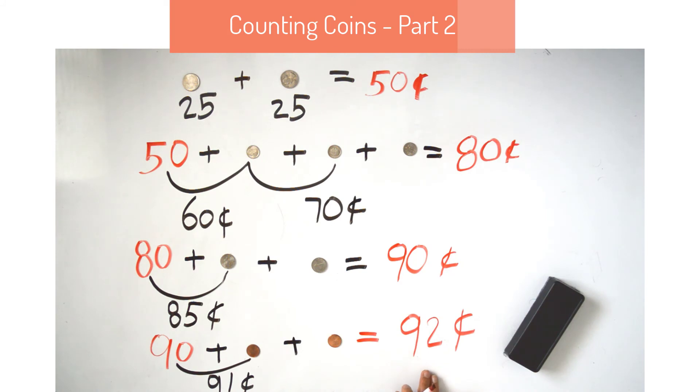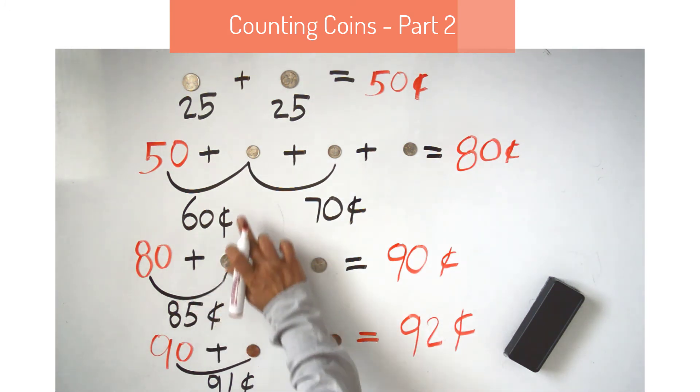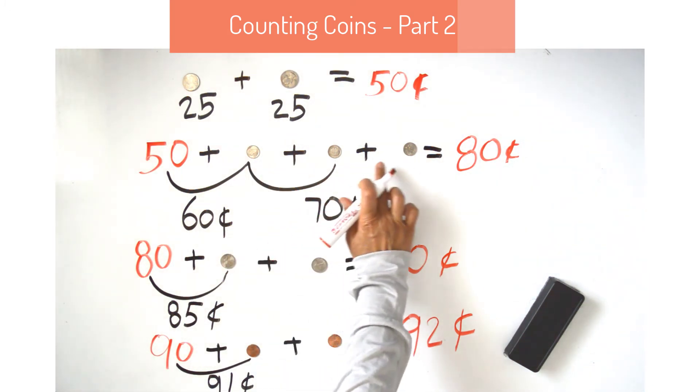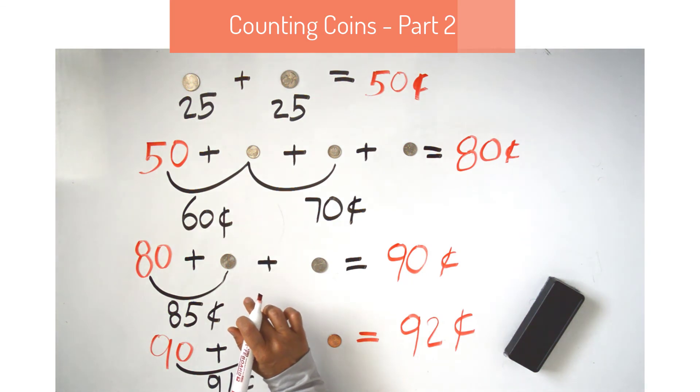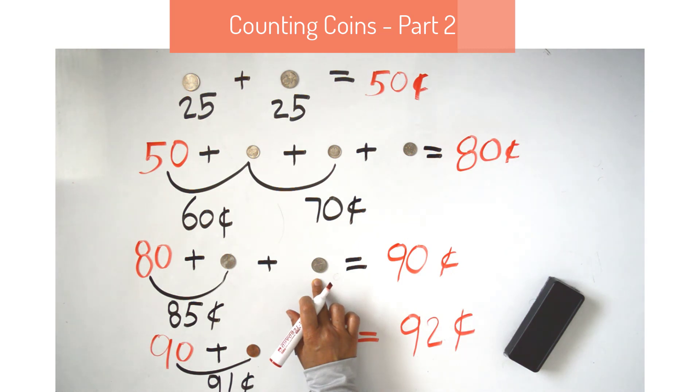All together we have 92 cents. Just remember when you are adding dimes count by 10 because each dime is worth 10 cents. When you are adding nickels count each nickel by 5 cents. And when you are adding pennies count each penny by 1 cent.